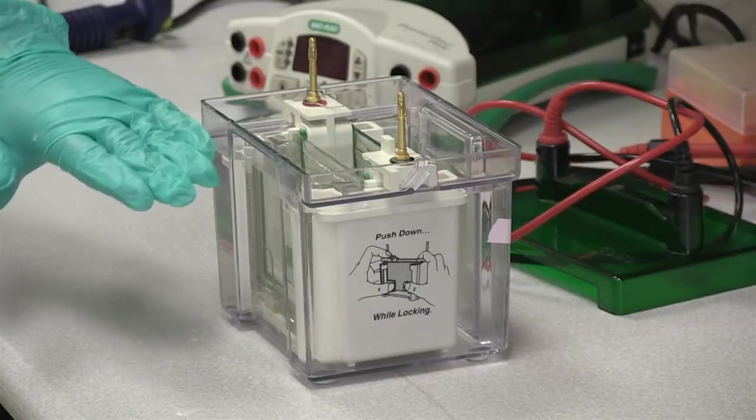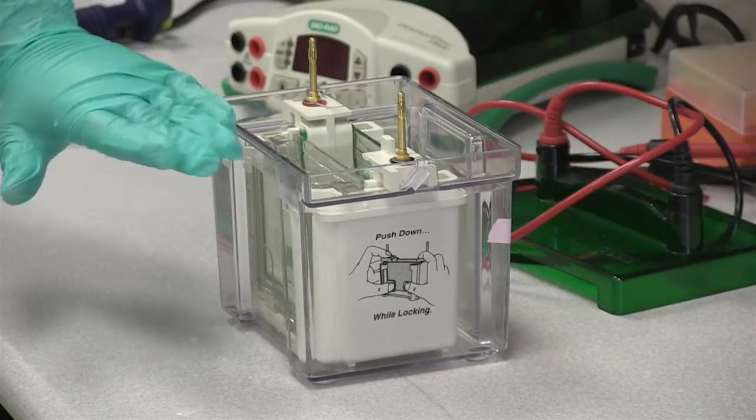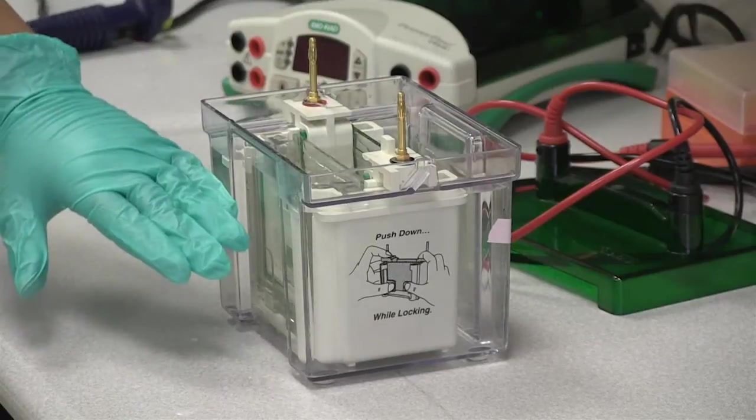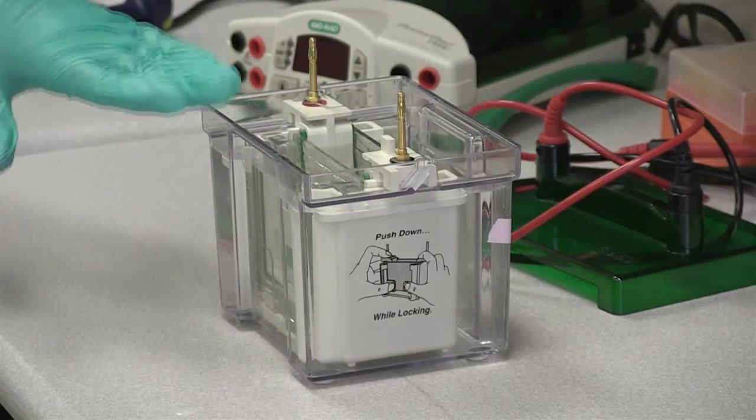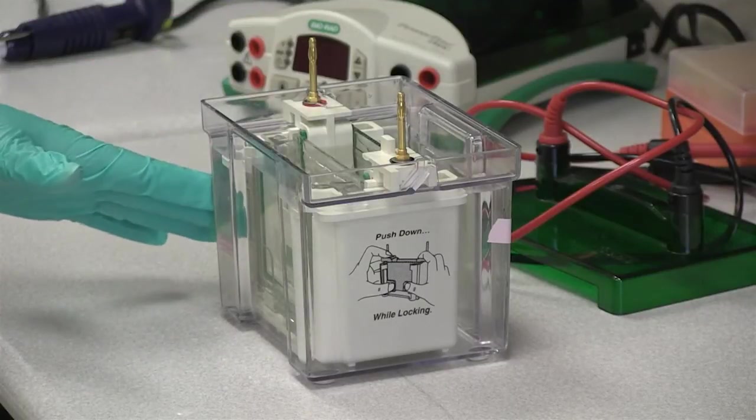Note that the level of our buffer has been halfway in between the shorter glass and the taller glass. That's what we were aiming for. So that's how full your chamber should be. The next thing that we do after we have this all set up is we're going to need to load our samples.